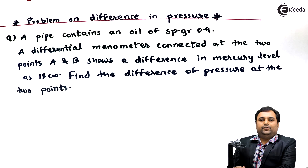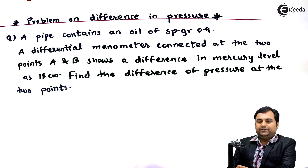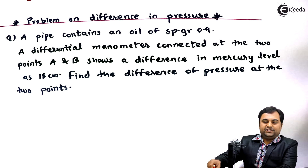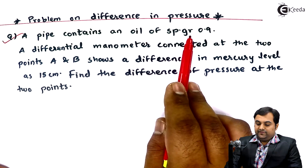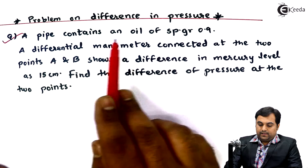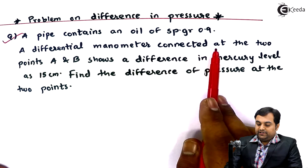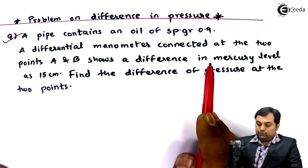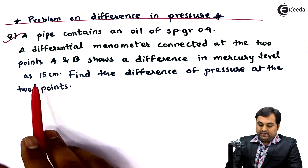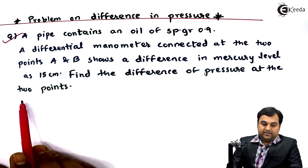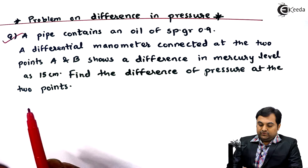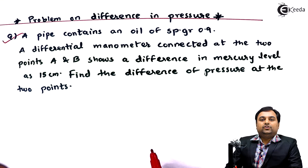Hello friends, in this video we will see a problem on how to calculate the difference of pressure using a differential manometer. A pipe contains an oil of specific gravity 0.9. A differential manometer connected at two points A and B shows a difference in mercury level of 15 centimeters. Find the difference of pressure at the two points.